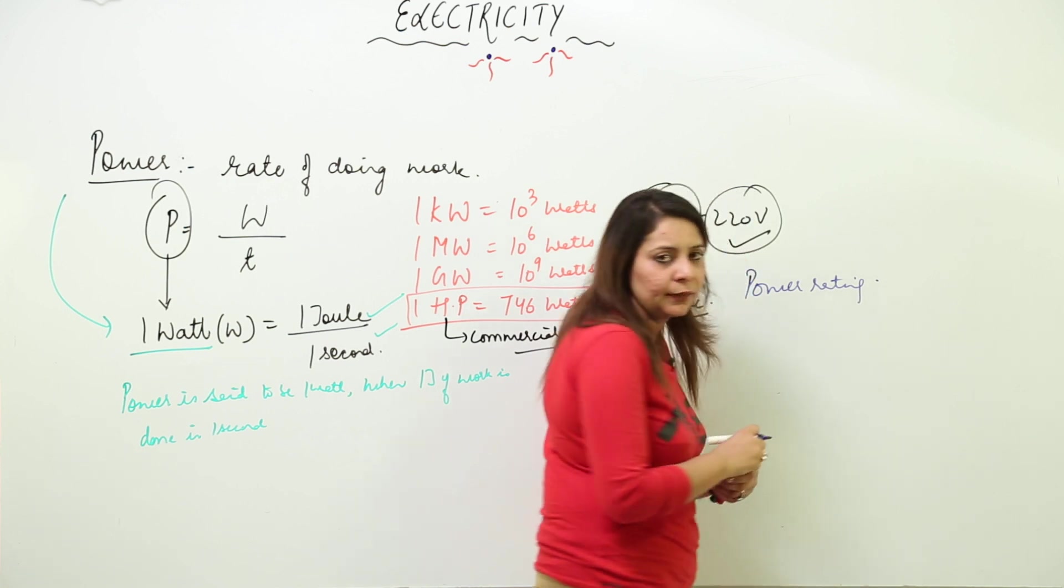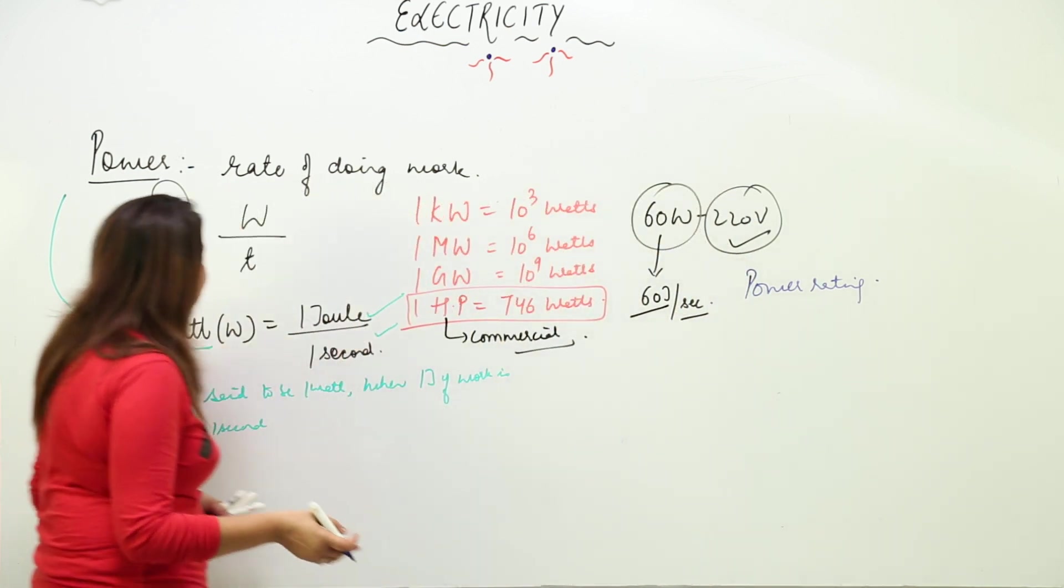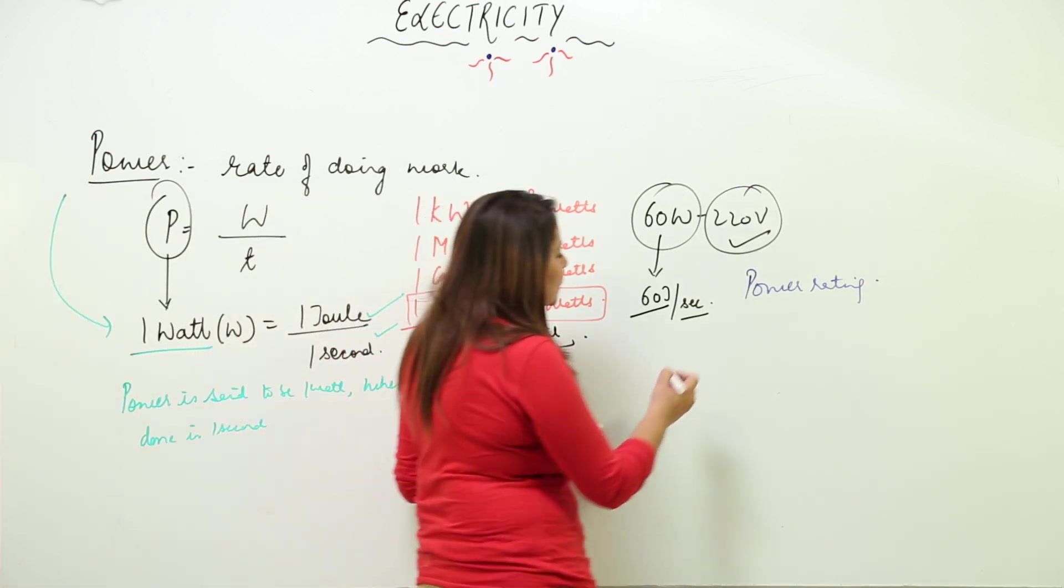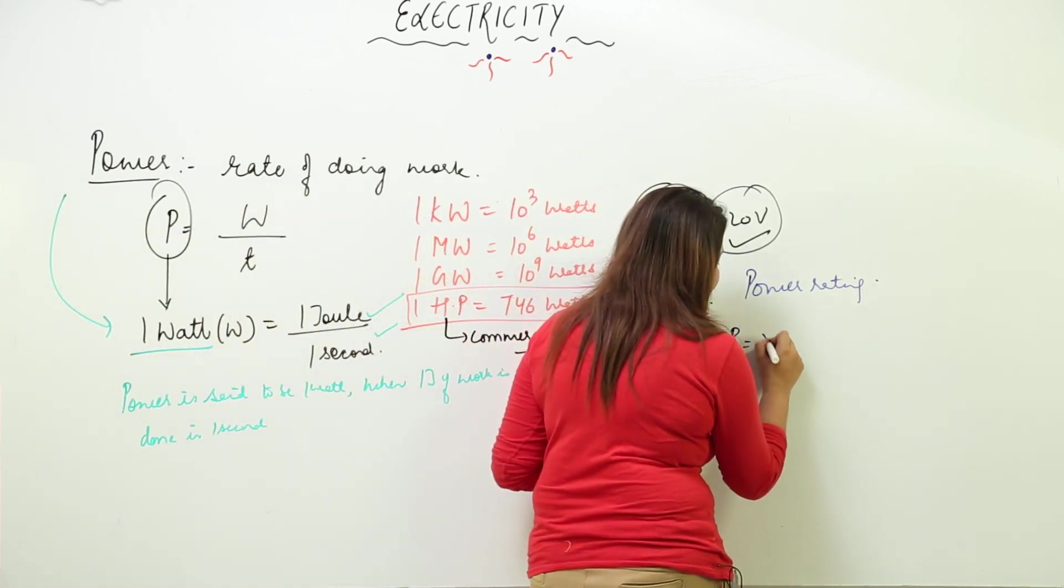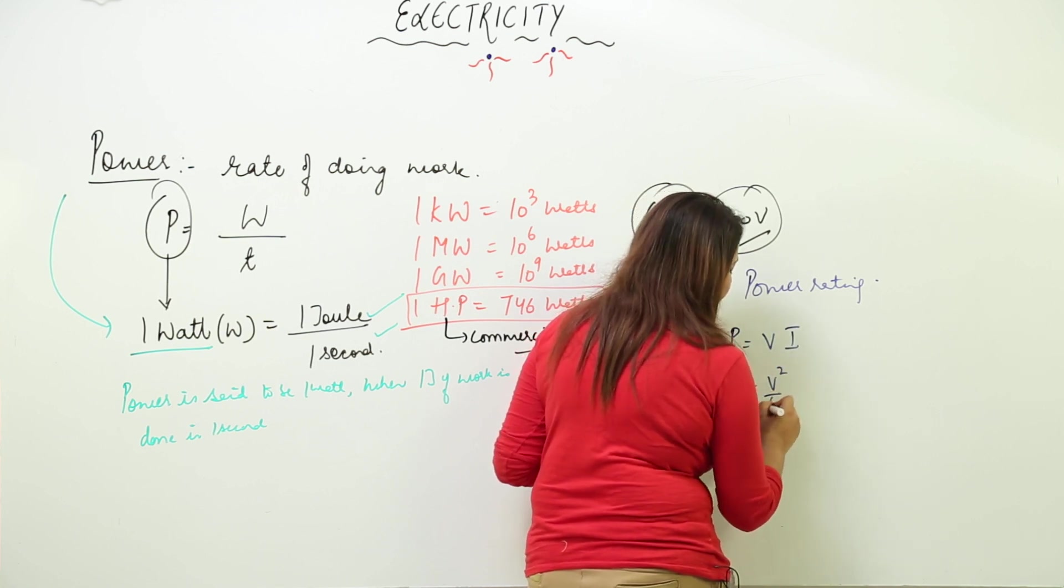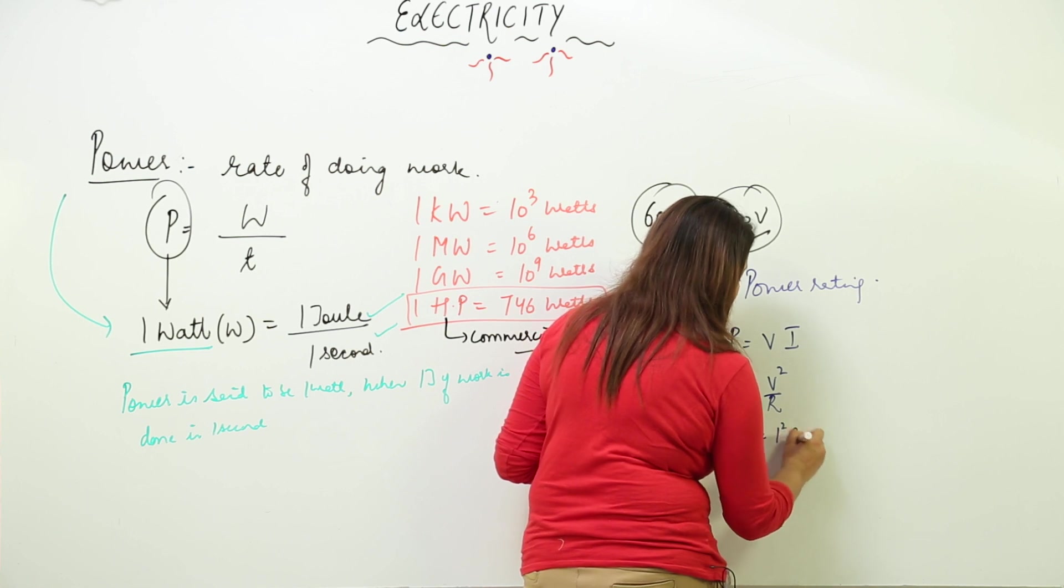We have different formulas. Power equals work upon time (P = W/t). Using Ohm's law, we get P = V × I, P = V²/R, and P = I²R.